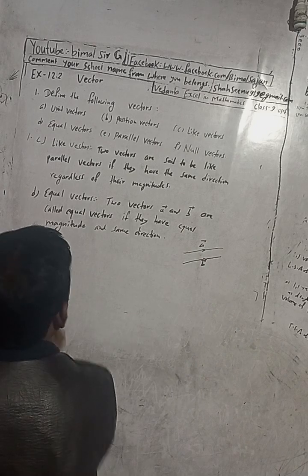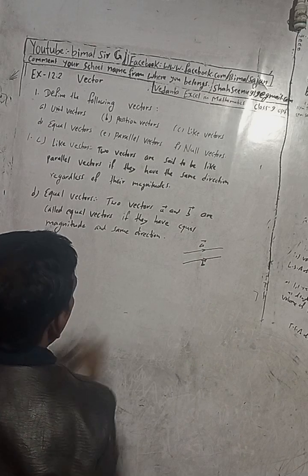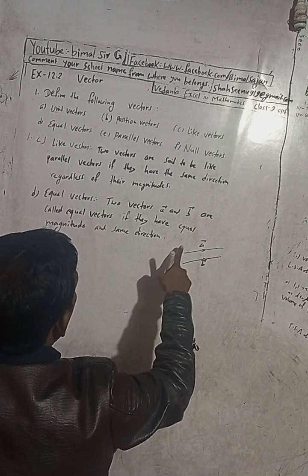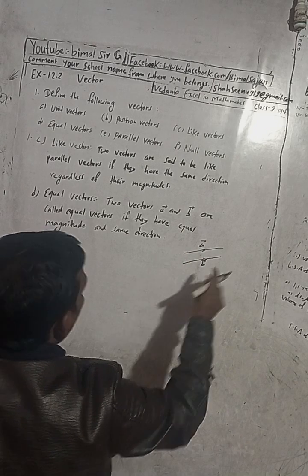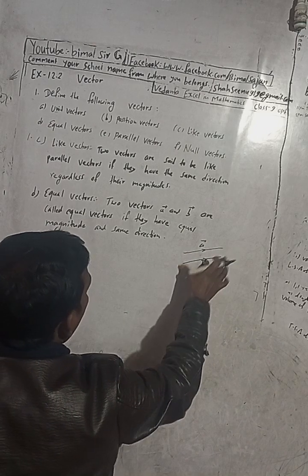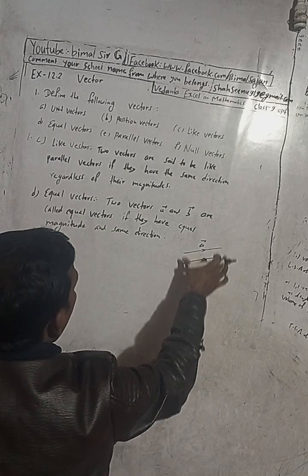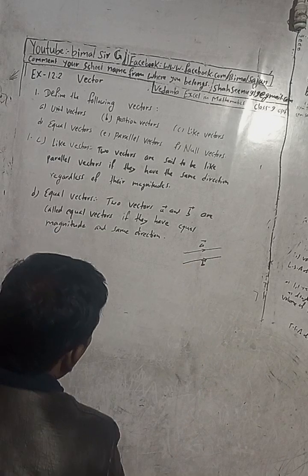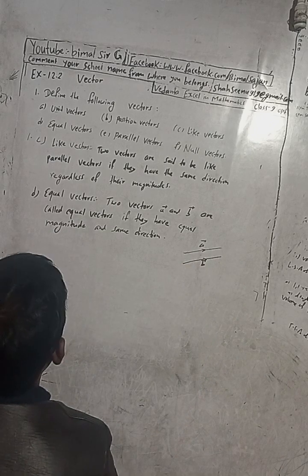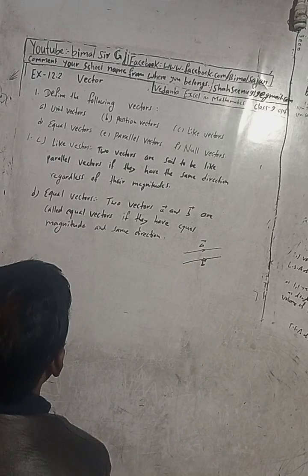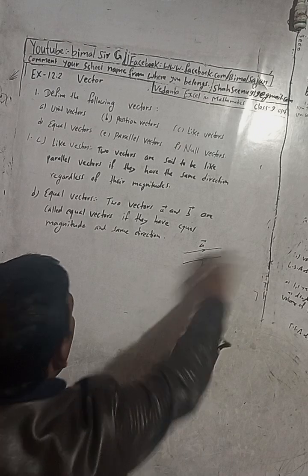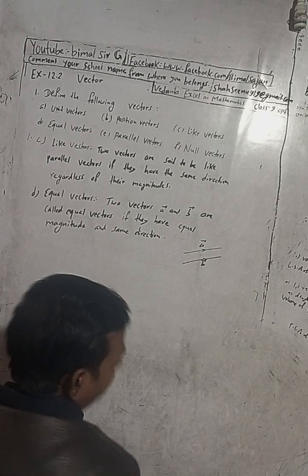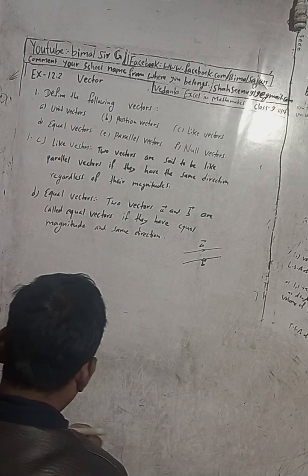So these two vectors are equal vectors if they have equal magnitude — meaning the same length — and the same direction. Both conditions, same magnitude and same direction, must be satisfied.